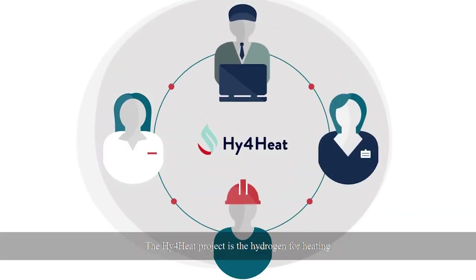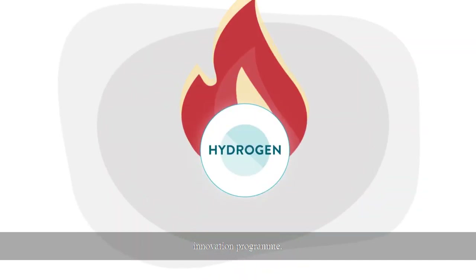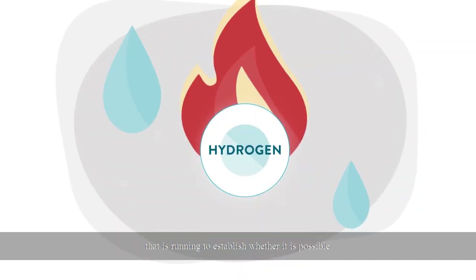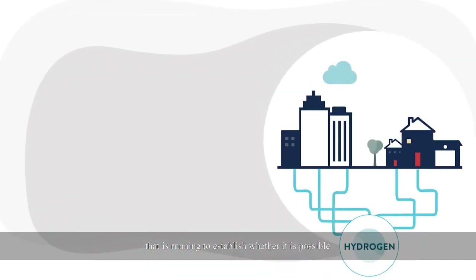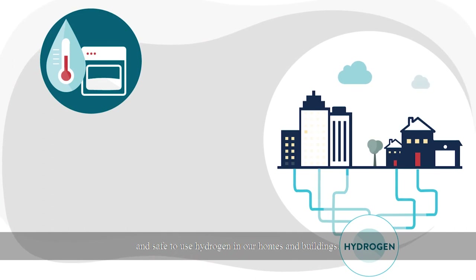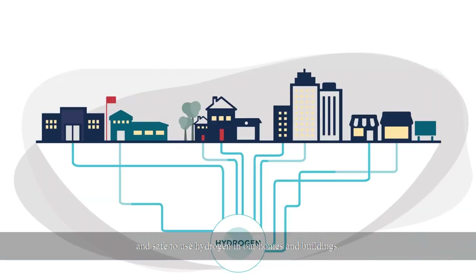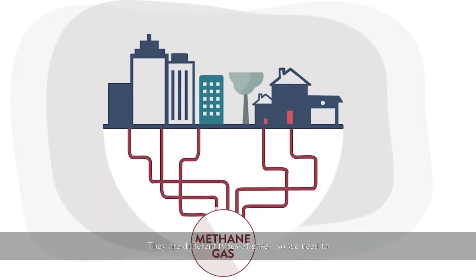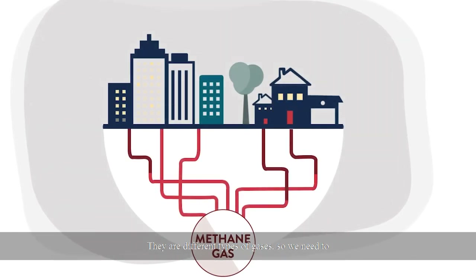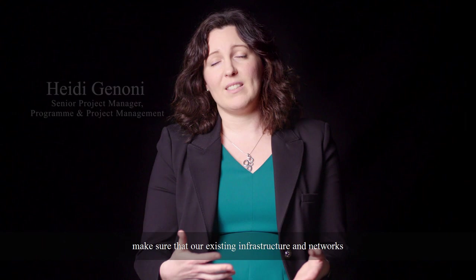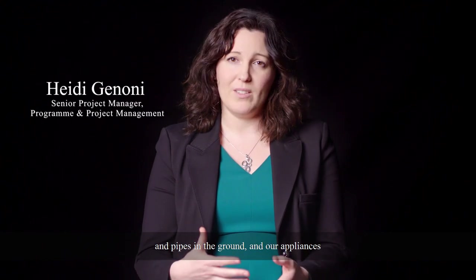The Hi4Heat project is a hydrogen for heating innovation program running to establish whether it's possible and safe to use hydrogen in our homes and buildings. Hydrogen is a gas like natural gas and methane, but they are different types of gases, so we need to make sure that our existing infrastructure networks, pipes in the ground, and appliances are suitable to be used with hydrogen.